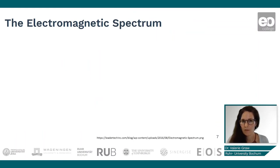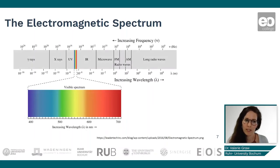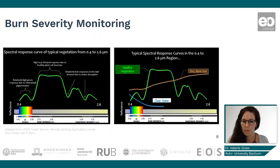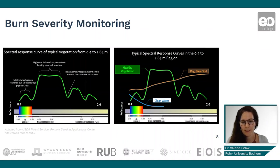Coming to how we actually do this with remote sensing — for burn severity monitoring, we quickly recap the electromagnetic spectrum with its different wavelengths and spectral signatures. For burn severity monitoring, we first look at the spectral response curve of typical vegetation. On the left you can see the relatively high green response due to chlorophyll pigmentation, and then the high response in the near-infrared. Comparing this with dry and bare soil, you can clearly see the differences especially in the near-infrared but also in the shortwave infrared.